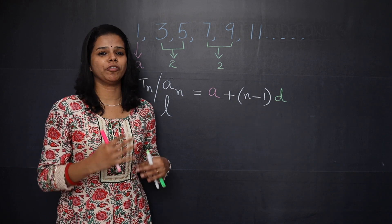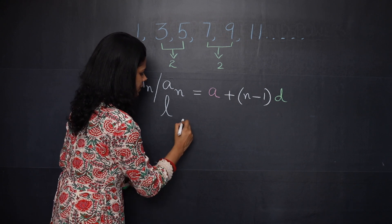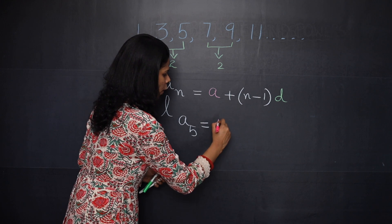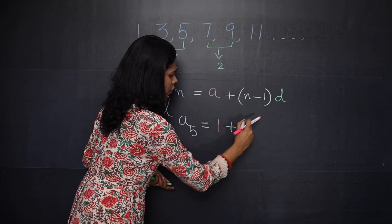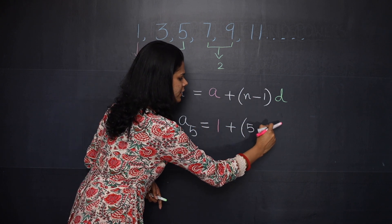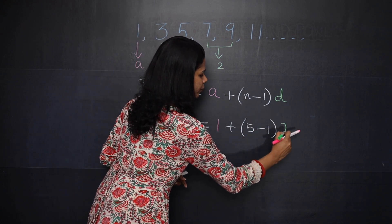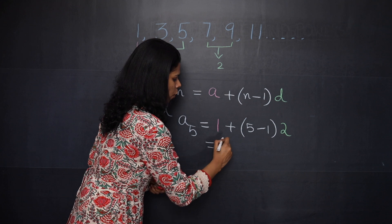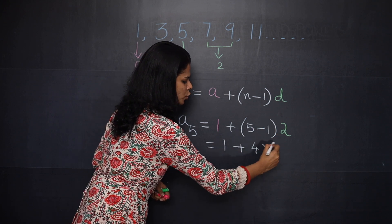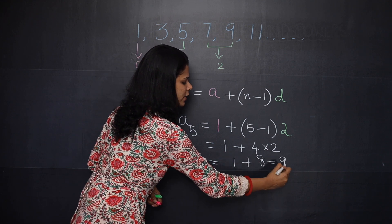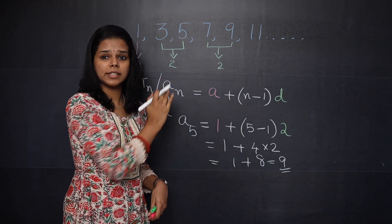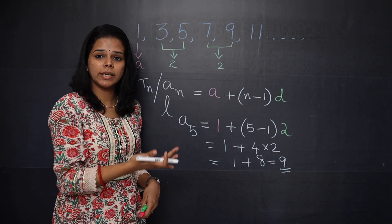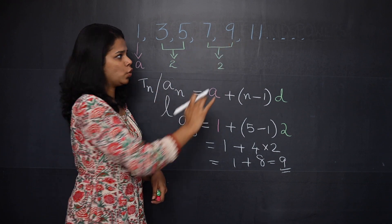Now let us find the fifth term of this AP. So it becomes a₅. a₅ = 1 + (5 − 1) × 2. That is 1 + 4 × 2 = 1 + 8 = 9. So now let's check if the fifth term of this sequence is 9. a₁ is 1, a₂, a₃, a₄, and a₅ — here it is 9.